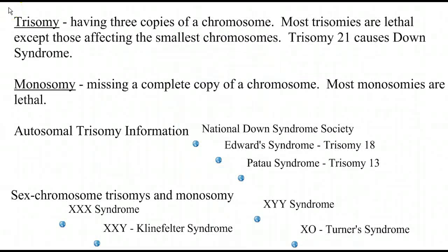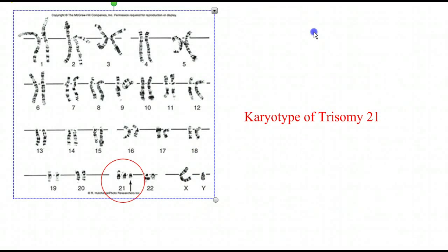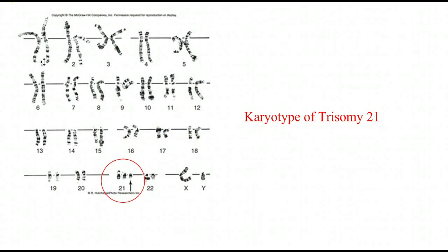Trisomies where you have three copies of one chromosome are not good news. In general, the trisomies that are not lethal are those that affect only the very smallest chromosomes. Here's a karyotype of a trisomy 21 — you can see number 21 here, we've got three copies of this chromosome instead of the normal two. Trisomies in the smaller chromosomes like 18 and 19 are the ones where people might survive. Chromosome number one is much larger and has a larger number of genes on it, so trisomies in the bigger chromosomes are almost always fatal.